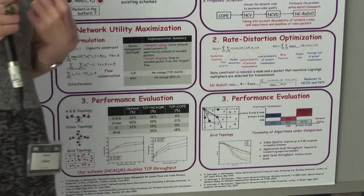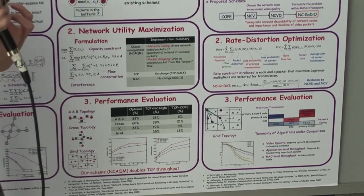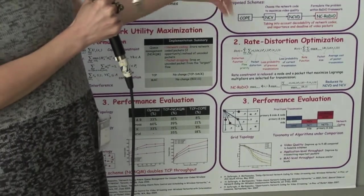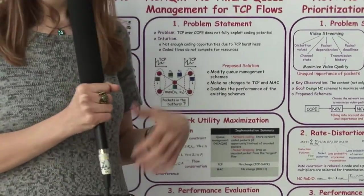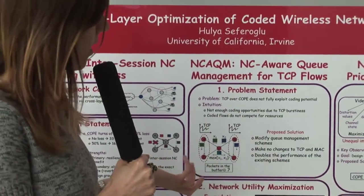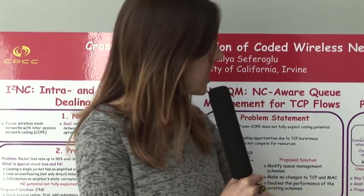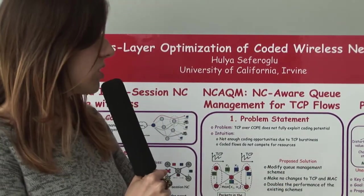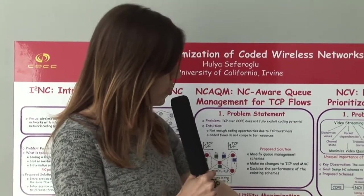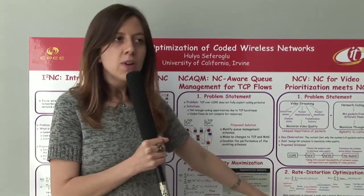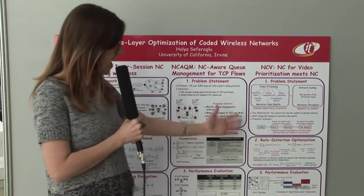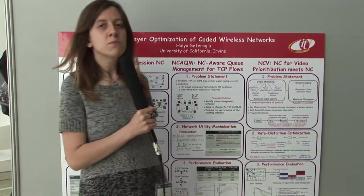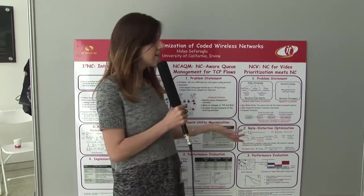So the content of the packets, not only their numbers, is important. After this observation, we design network coding schemes to maximize video quality. Specifically, we propose a rate-distortion optimization framework, and based on the solution we designed NC radio. We also propose some heuristics, and we saw that our schemes improve video quality significantly.